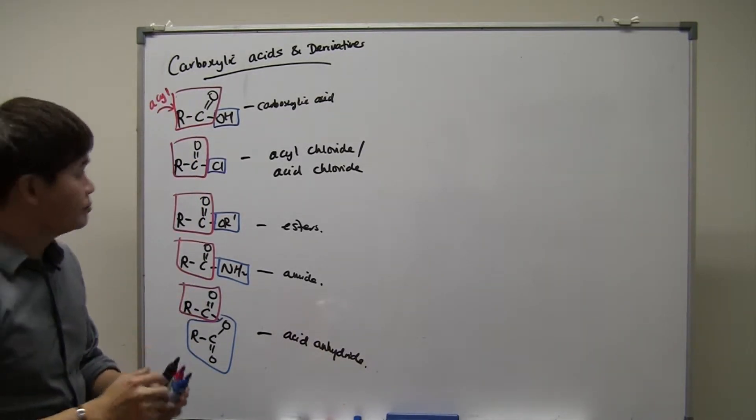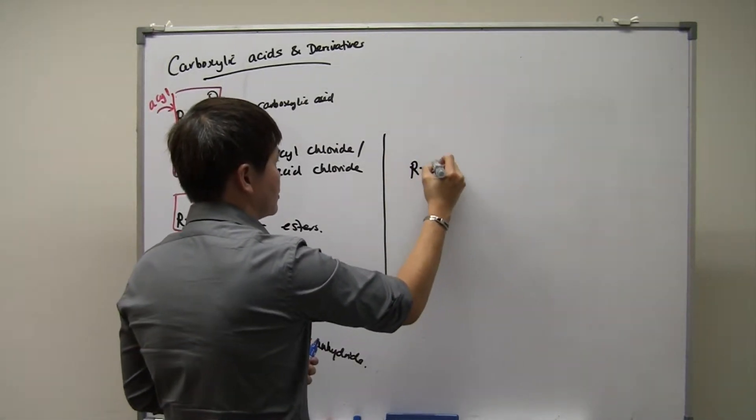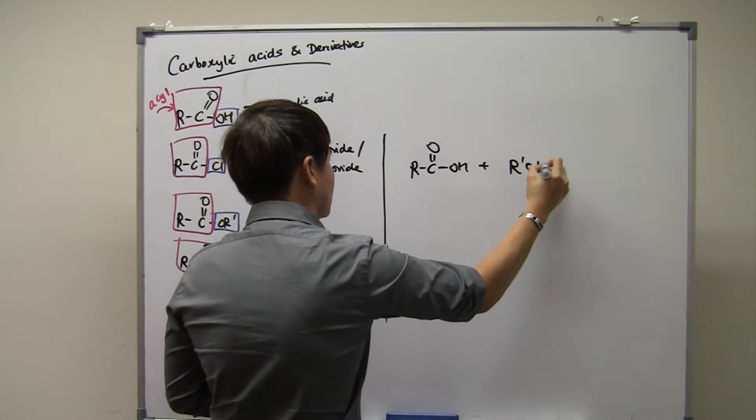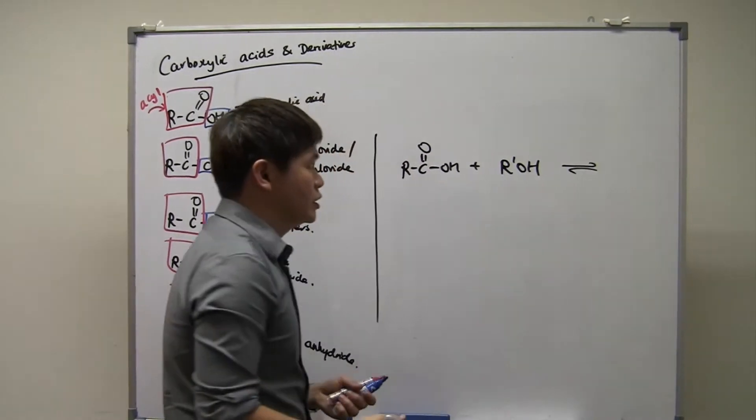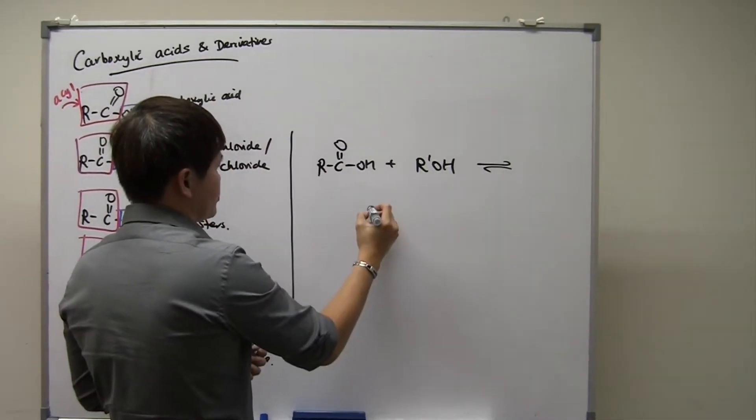We learned before in secondary school that if you have an acid plus an alcohol, of course it can be acidified or alkaline conditions. It can be reversible. What actually happens is that an ester is formed.